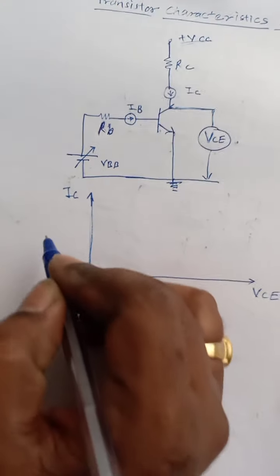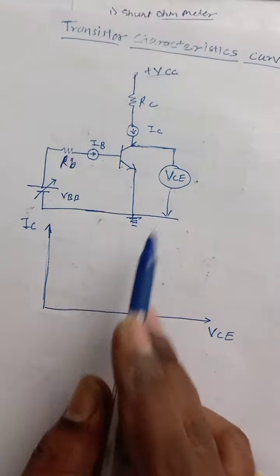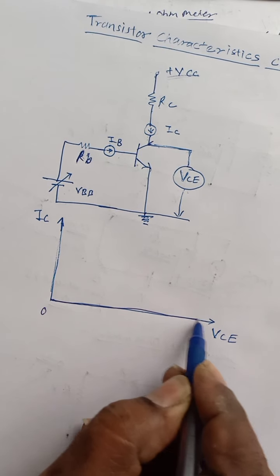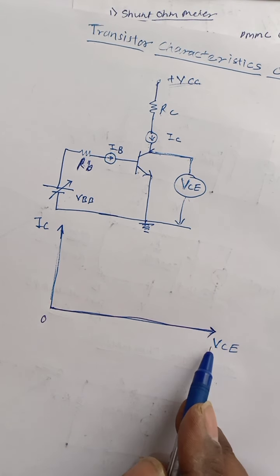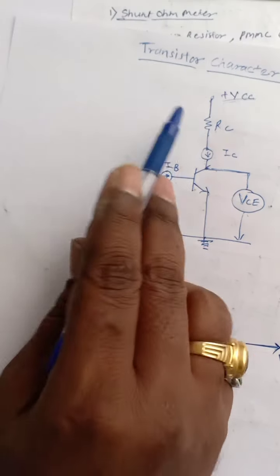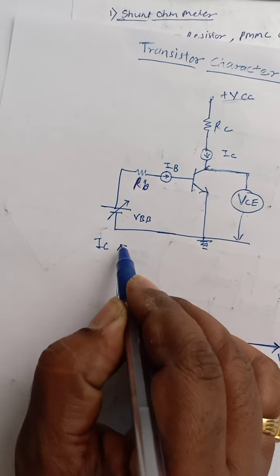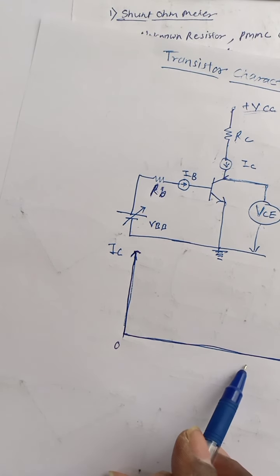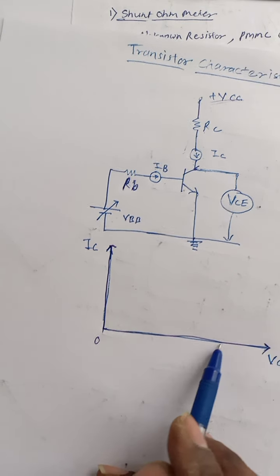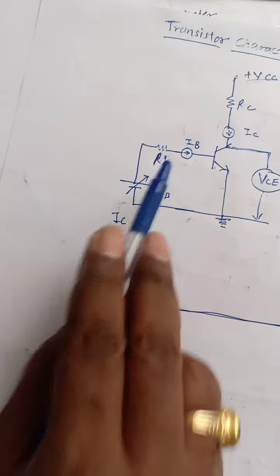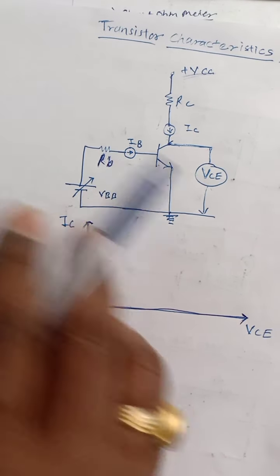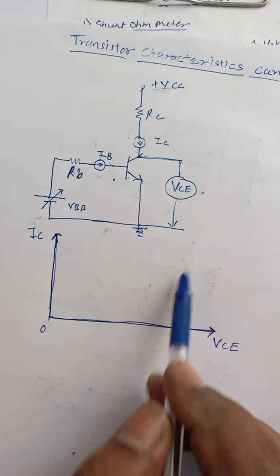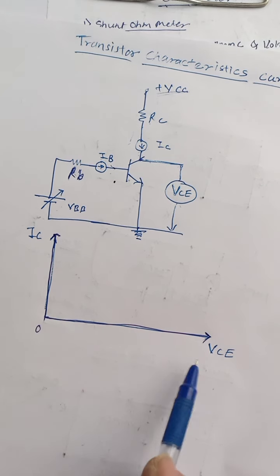You vary the VCC voltage so that you can change the collector-to-emitter voltage from 0 to maximum. On the X-axis we are going to vary the VCE and observe the collector current through the transistor. The relation between collector current and VCE gives the characteristic curves for different values of input current, that is base current IB. For different values of base current IB, you check the variation between collector current and VCE.